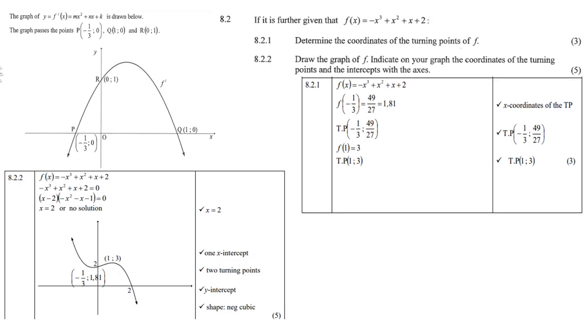It is further given that f of x is minus x cubed plus x squared plus x plus two. That's the formula of the cubic function. You must determine the coordinates of the turning point. Remember, to find turning points, we normally differentiate the equation. If you use the grade 12 method, once you've done the derivative, you let the derivative be zero, and you get your x value. Now, x is minus one-third.